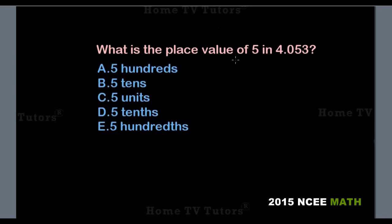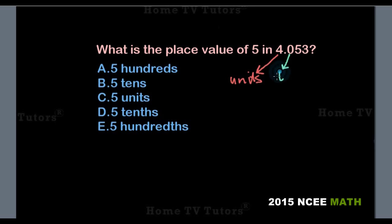What is the place value of 5 in 4.053? The decimal place value of the digit 4 is in the units, while the next digit after the decimal point, which is 0, is in the tenths. The next digit after that, the digit 5, is in the hundredths.